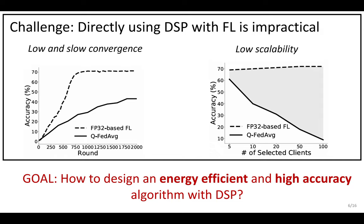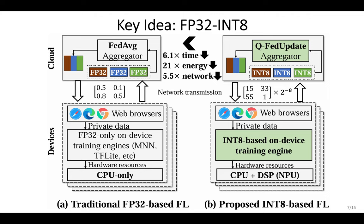With a minimal accuracy loss of only 2%, DSPs are attractive. However, integrating DSPs with federated learning introduces challenges, particularly in terms of convergence speed and compatibility with floating-point operations. To address these challenges, our work introduces QPAD, a novel approach that substitutes traditional floating-point operations with integer arithmetic.